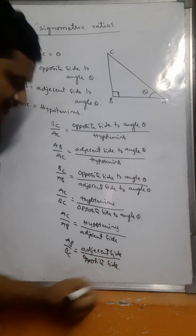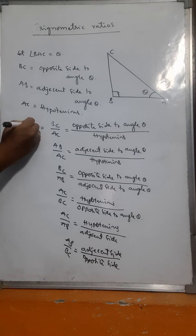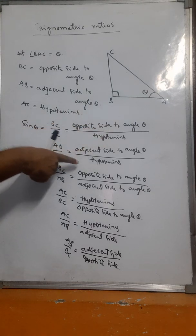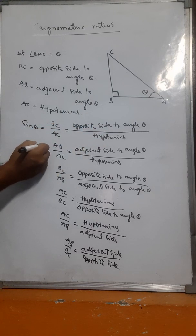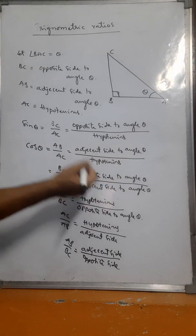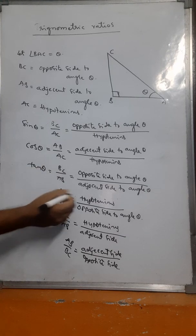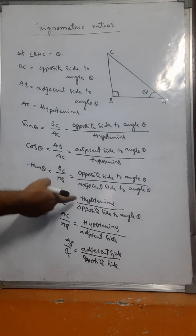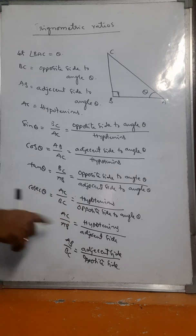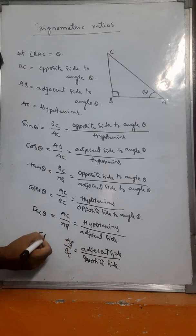The ratio of opposite side by hypotenuse is sine theta. Adjacent side by hypotenuse is cosine or cos theta. Opposite side by adjacent side is tan theta. Hypotenuse by opposite side is cosec theta. Hypotenuse by adjacent side is sec theta. Adjacent side by opposite side is cot theta.